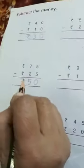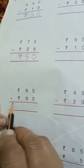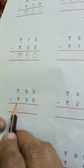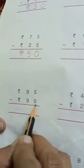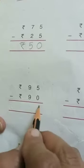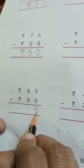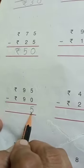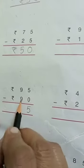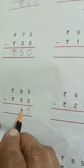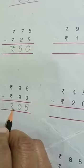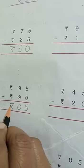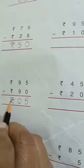Now next: rupees 45 minus rupees 50. Now next: 95 rupees minus rupees 90. Now 5 minus 0 is 5 — there is no line for 0, so it remains the same number. And 9 minus 9 is 0. Answer is rupees 5.